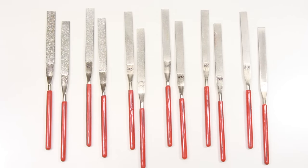When I need a small file or a rasp, I usually turn to this set of diamond-coated files. They range from 60 grit all the way up to 600 grit. They work on wood, metal, and plastic. They're inexpensive, very handy, and very versatile.